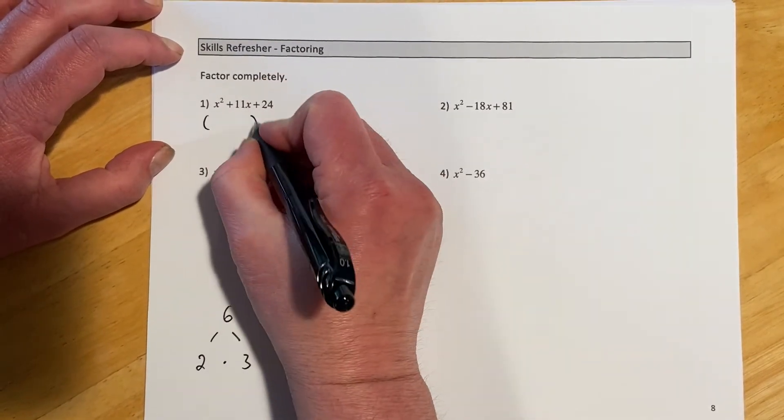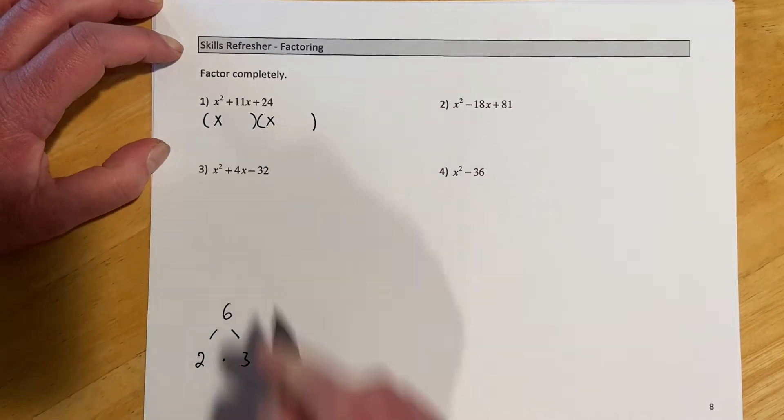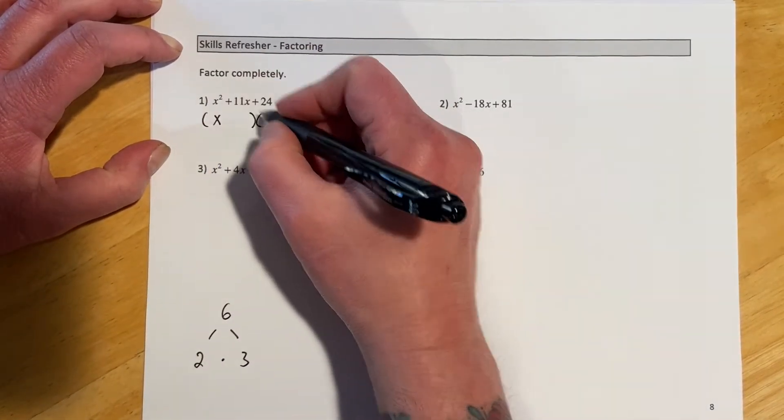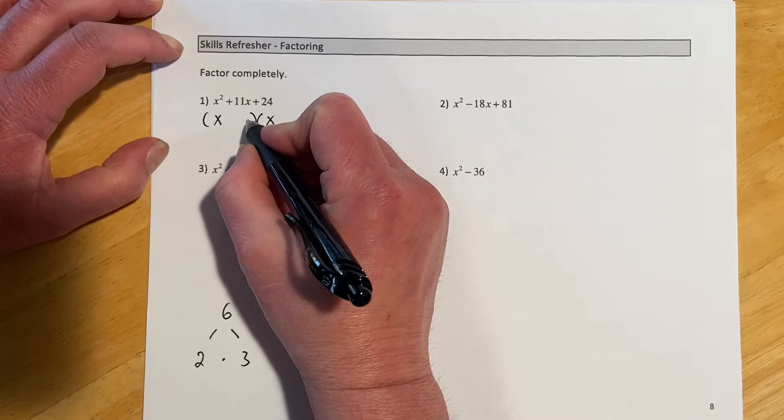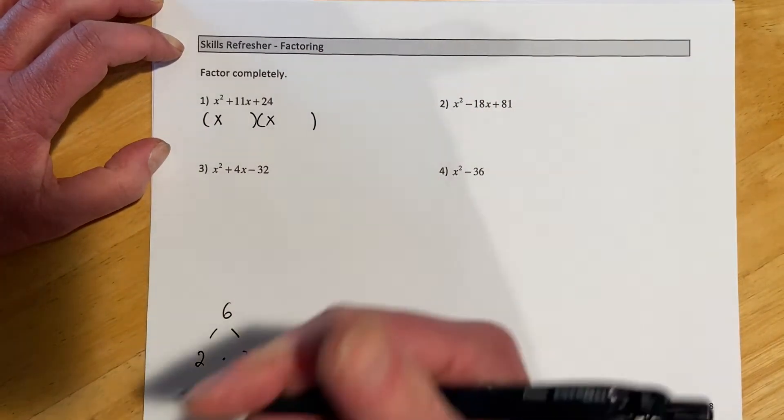So looking at this thing, this is where we set up our parentheses, we set up x's in front because we know this is going to go x times x to get x squared. And then we know here on the end it has to go this times this to make the 24.